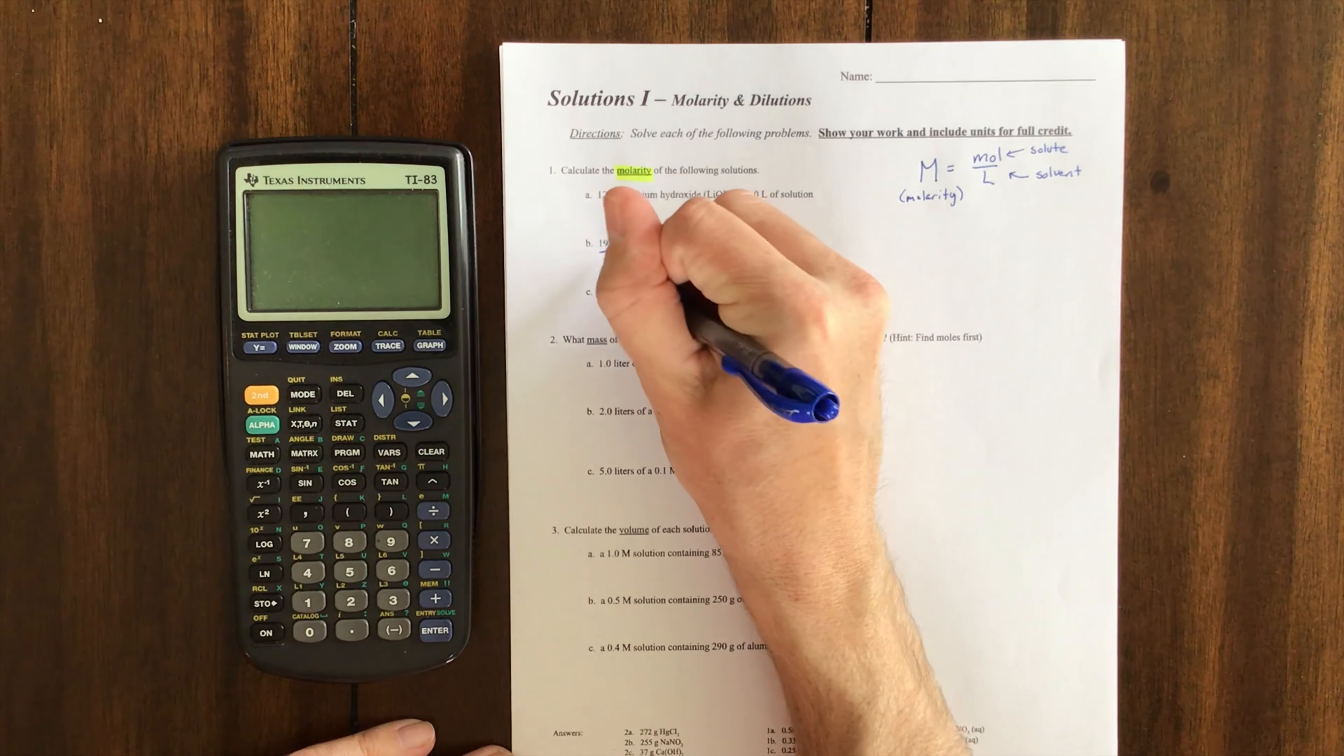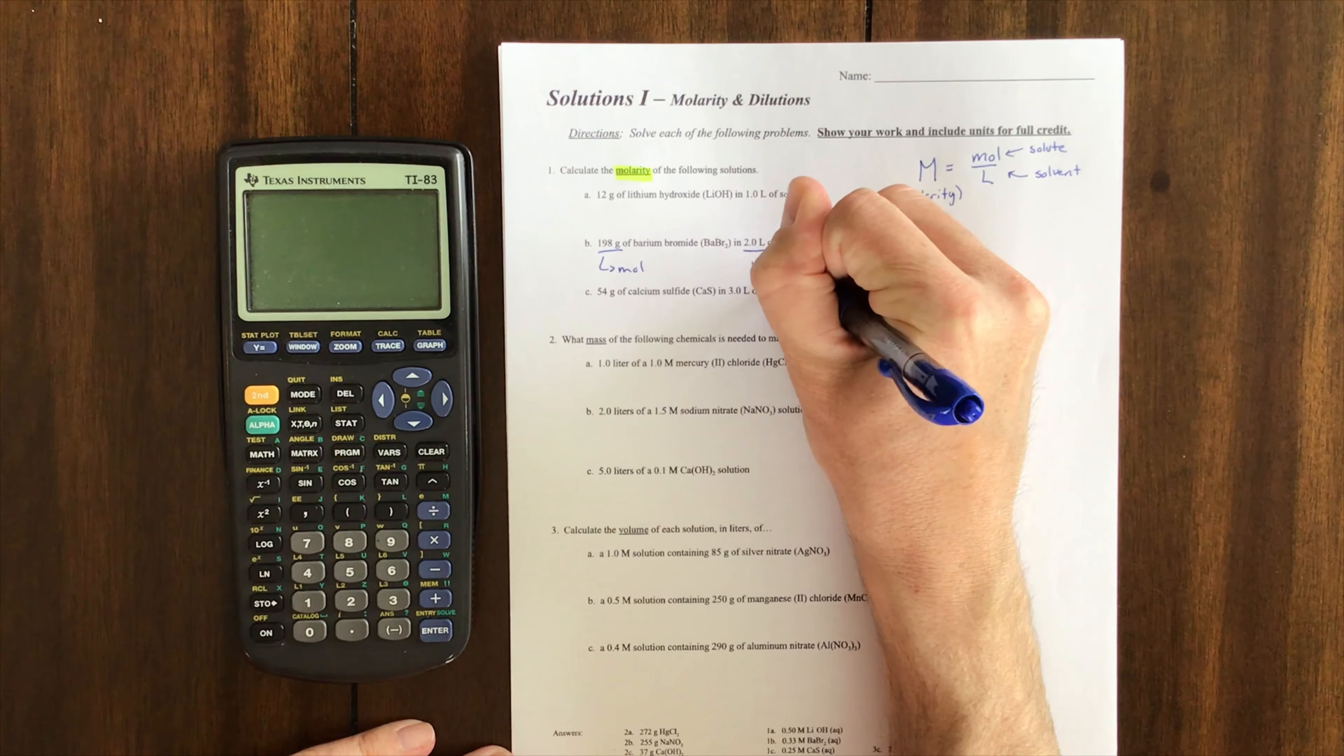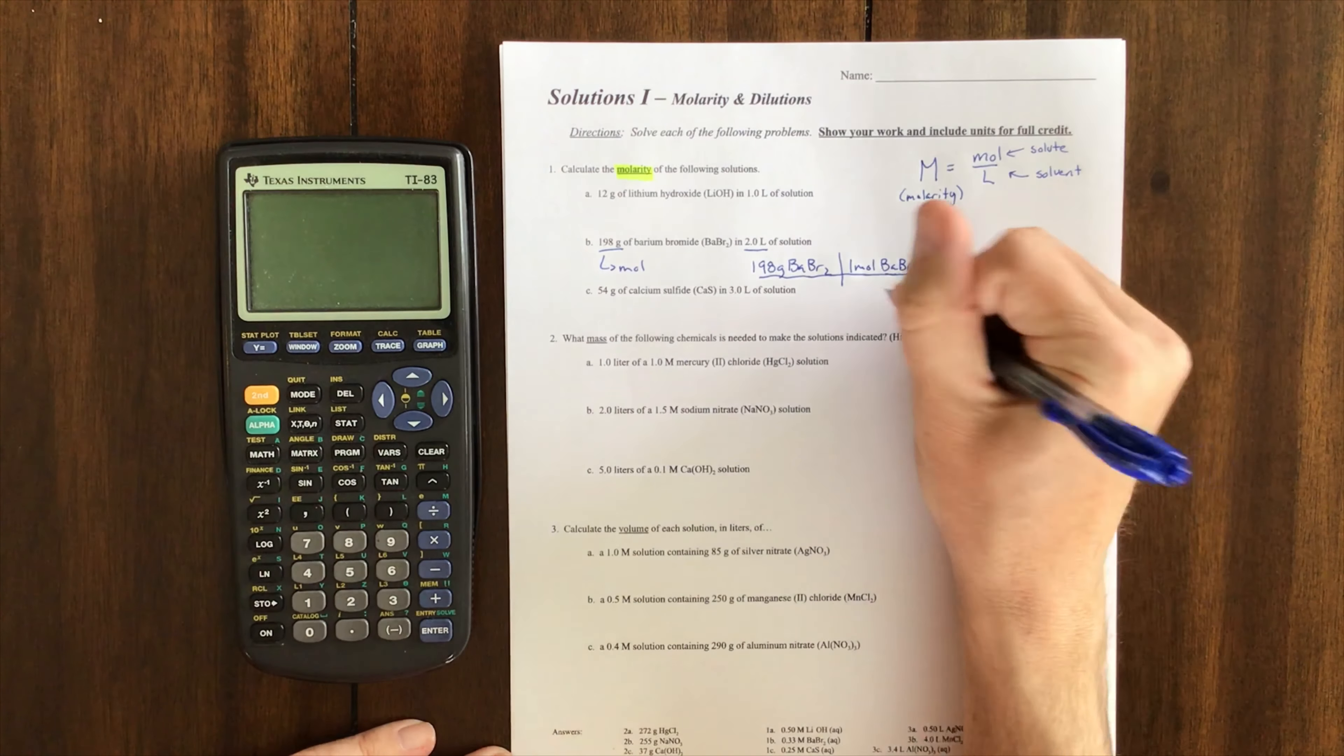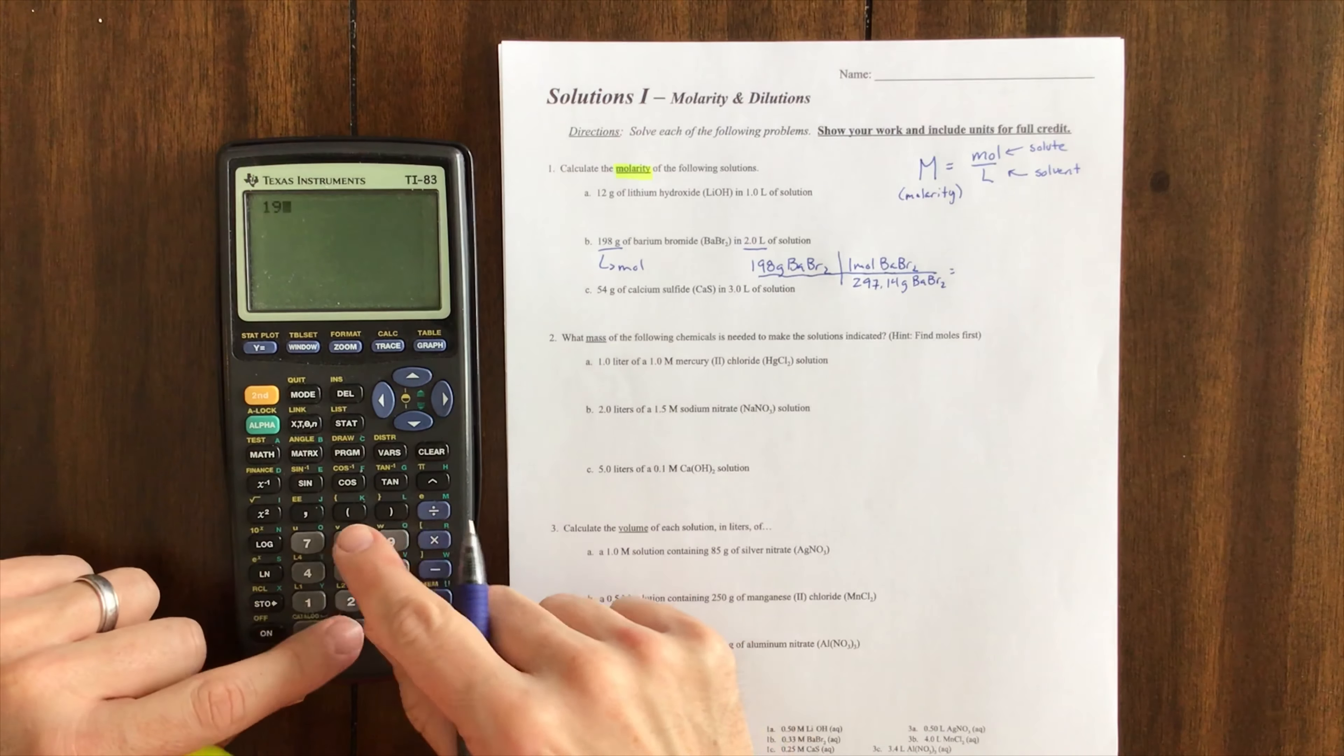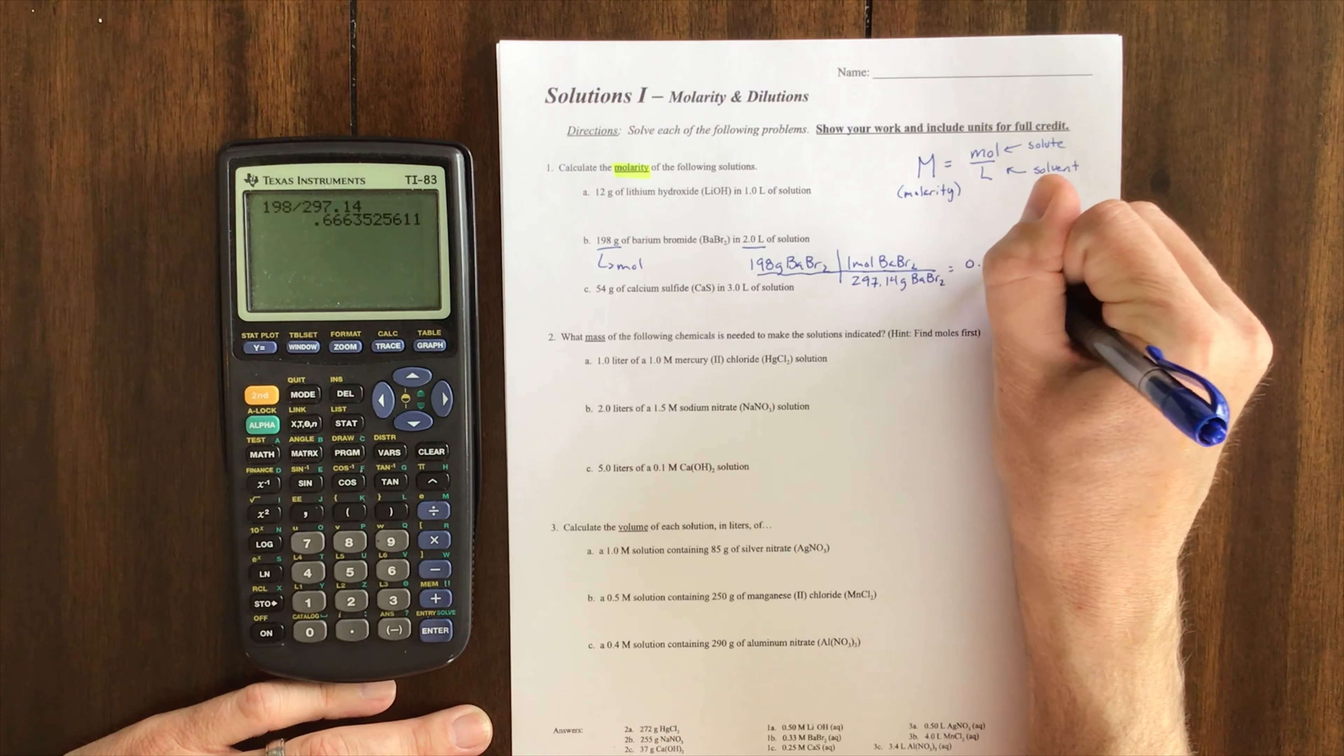We made these problems harder on purpose. If you ever have grams, you've got to think that's a way to get the moles. So what I'm going to do is take 198 grams of BaBr2 and convert that to moles. One mole of BaBr2 is, if I look at the periodic table, 297.14 grams. Now I have 198 divided by 297.14, which equals 0.666 moles.